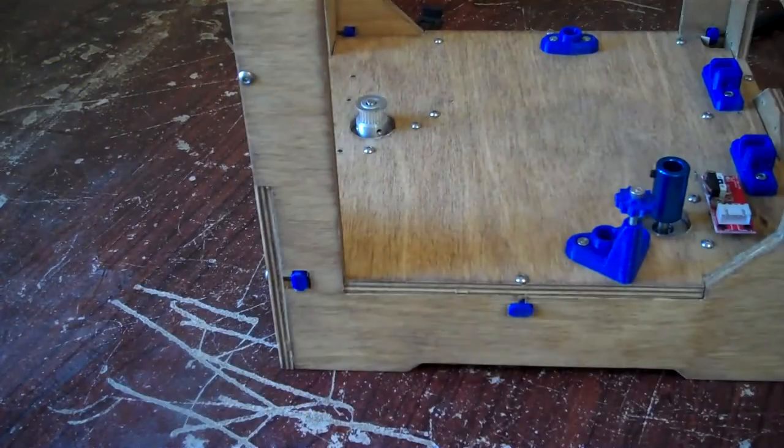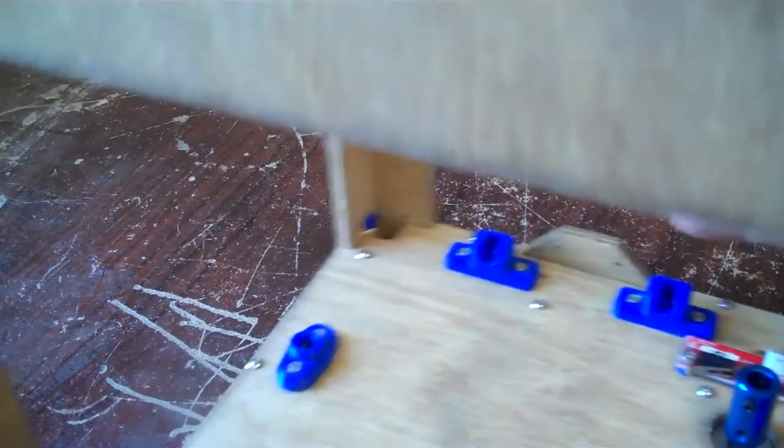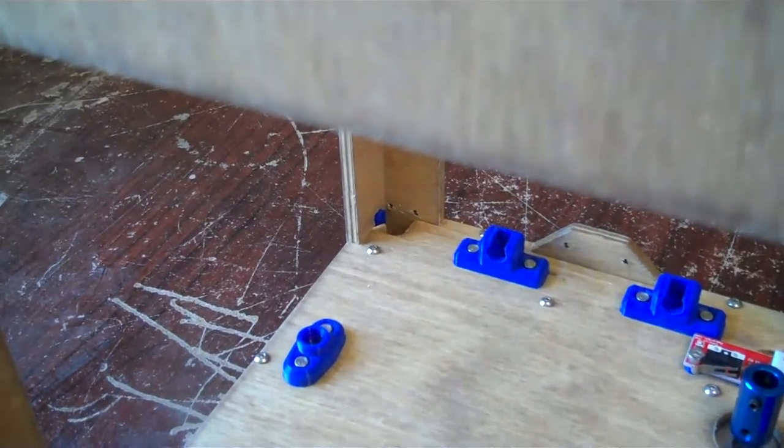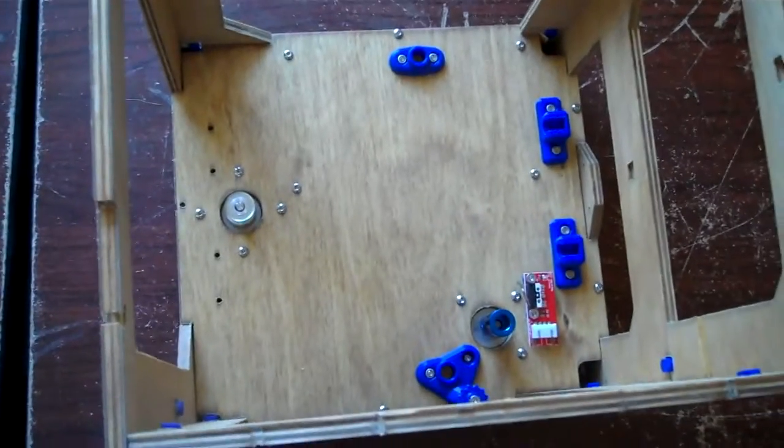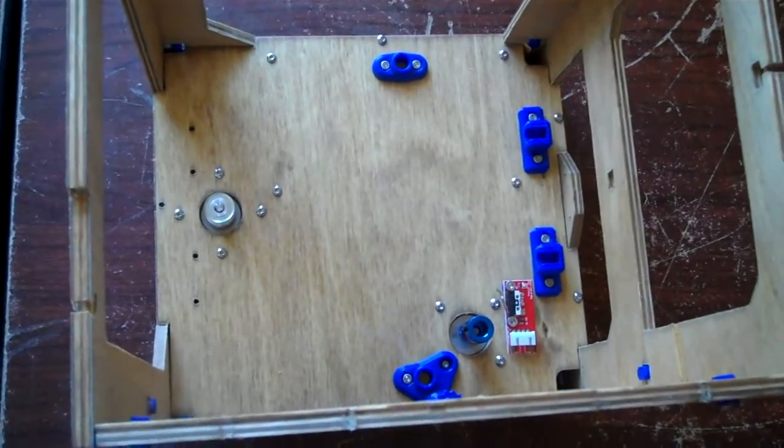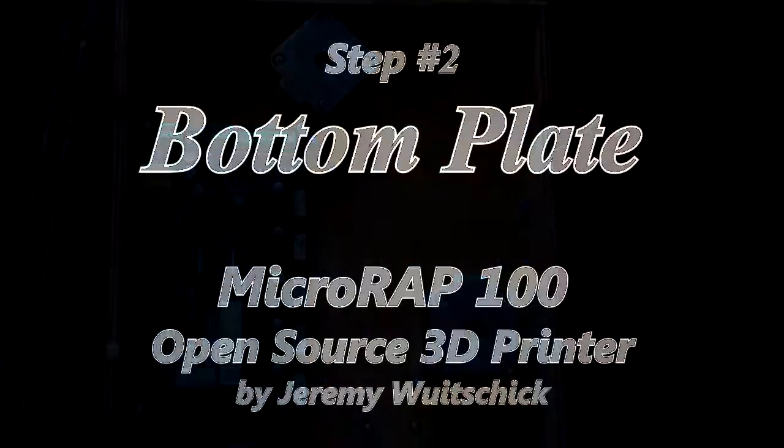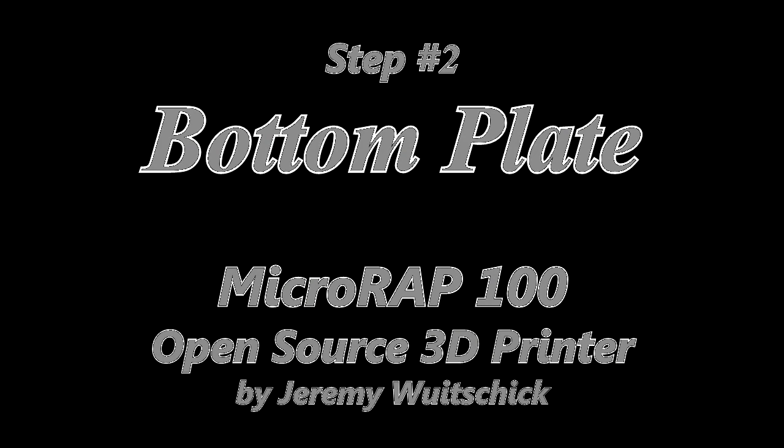Now that we've finished up, let's take one last look at the printer. And finally, from the bottom. Next is step three, where we're going to assemble the extruder that'll keep the plastic moving.